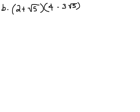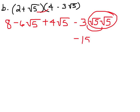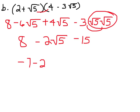In B, we've got the first two terms: 2 times 4 is 8, and then 2 times negative 3 square root of 5 is negative 6 square root of 5. And then our inside terms, we have positive 4 square root of 5. And then we have negative 3 times square root of 5 times square root of 5, which we know is 15. Now, negative 6 square root of 5 and positive 4 equals negative 2 square root of 5. And 8 and negative 15 would give us negative 7 minus 2 square root of 5.